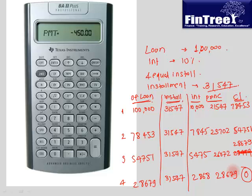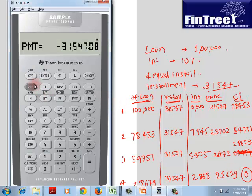So how do you use? Say second and clear TVM. To use amort function, first we have to solve for the same installment. So 100,000 present value, 10 is the I/Y, 4 is the N, compute payment. It would give you the same number 31,547. All of us have it.